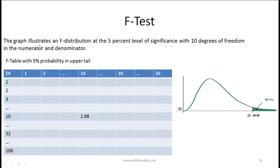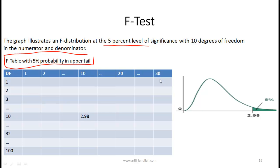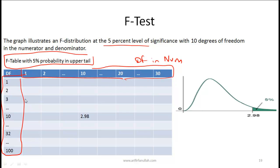The F-distribution, like the chi-squared distribution, is bounded by zero and is right-skewed since it involves ratios of variances. Each F-table is specified for a given significance level — for instance, 'F-table with 5% probability in the upper tail.' The degrees of freedom in the numerator appear across the top of the table and degrees of freedom in the denominator appear in the first column.